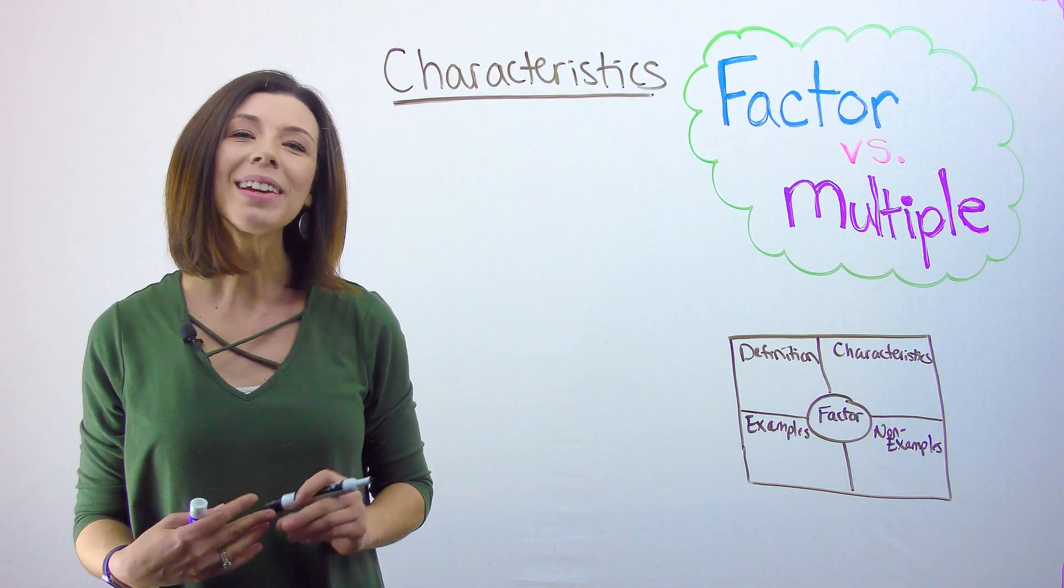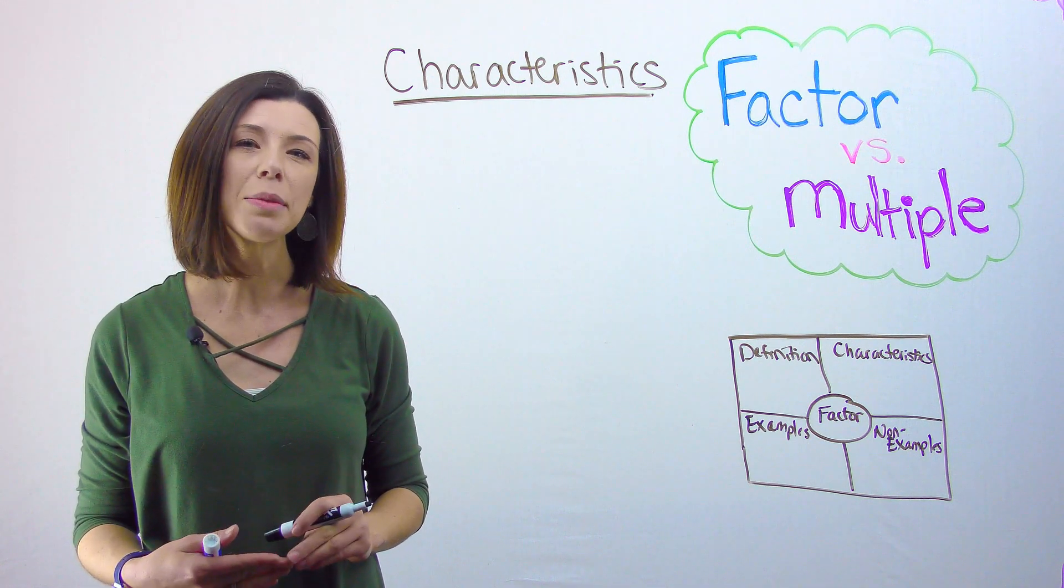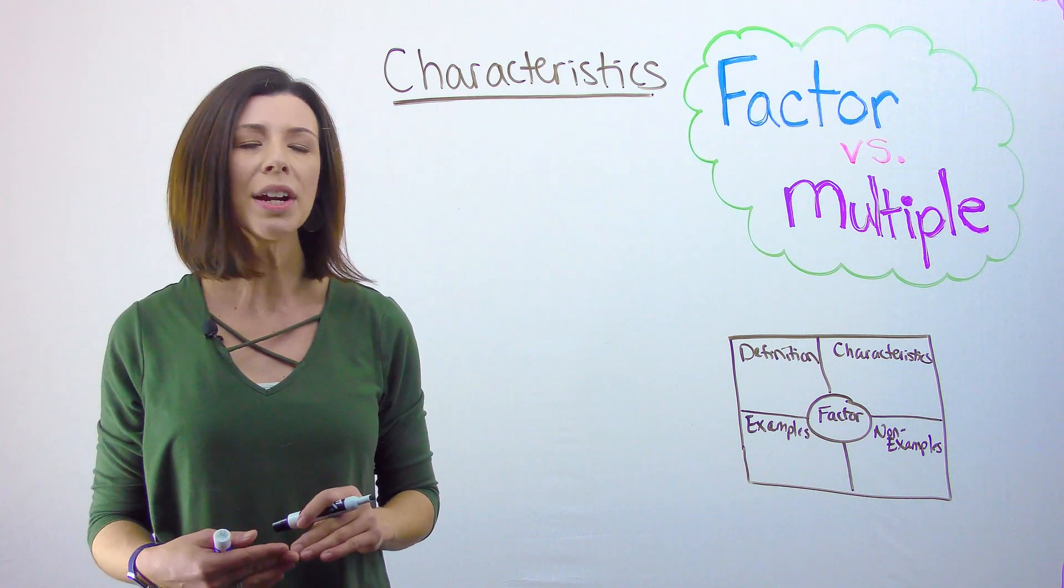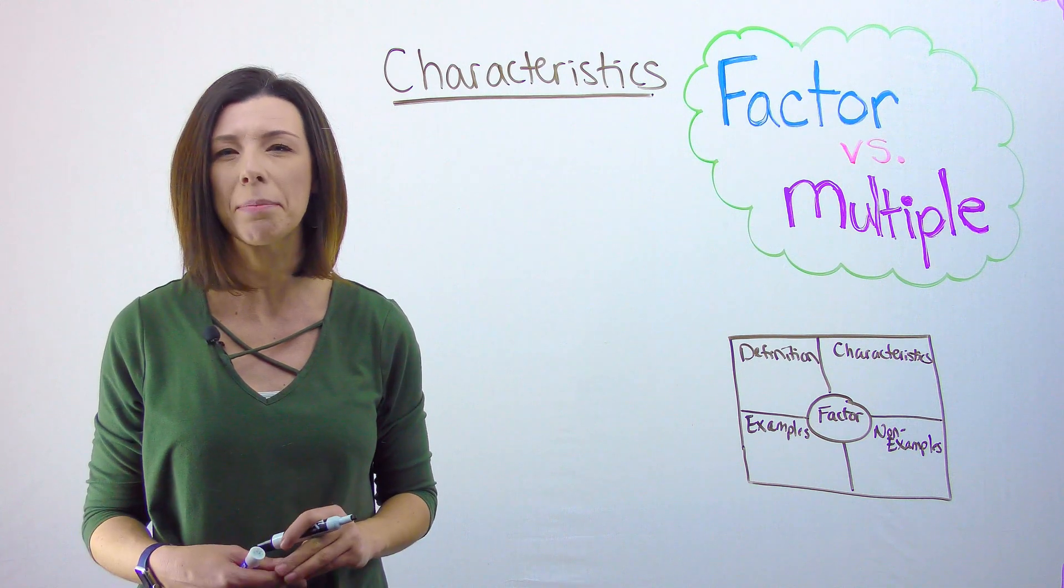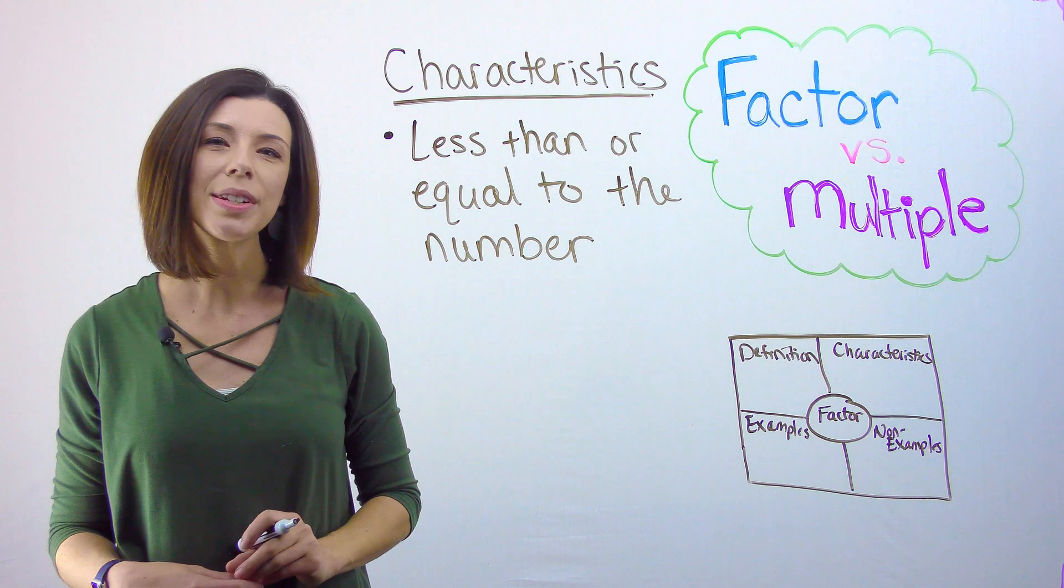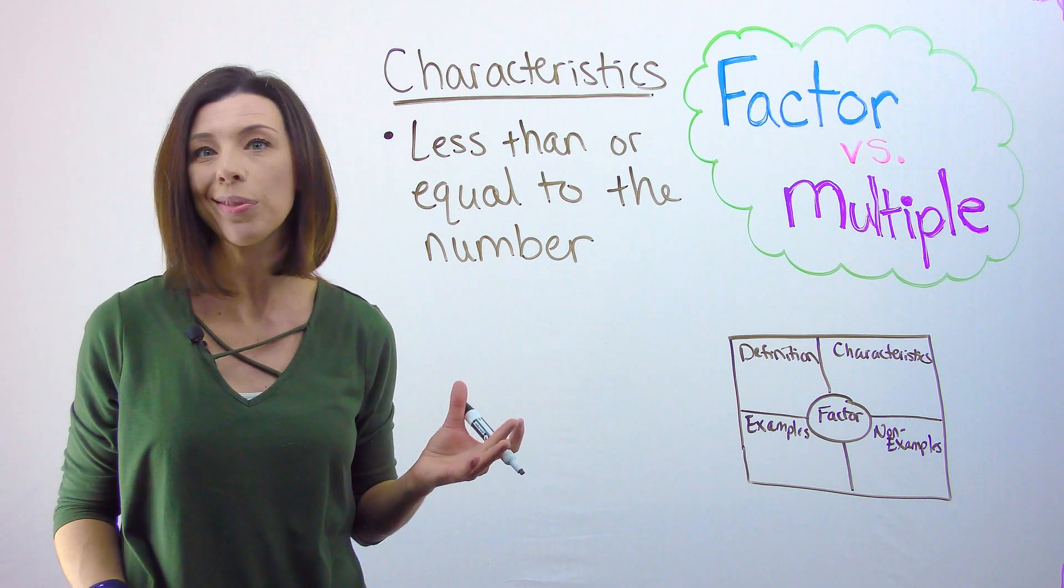When we think about characteristics of a factor, one thing we always land on is that a factor has to be less than or equal to the number. In other words, if I'm trying to find factors of 6, I won't have the number 7, for example. Another characteristic is that there's a finite amount of factors. In other words, I can count them.